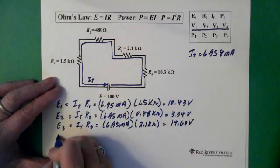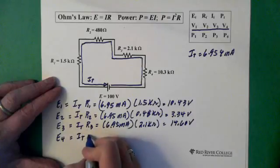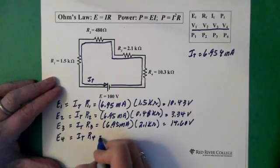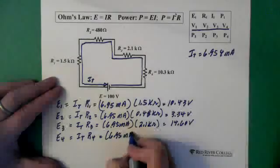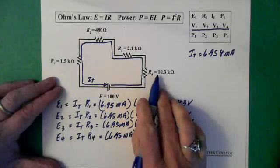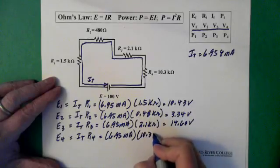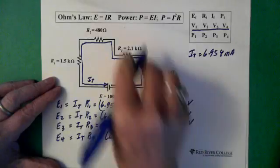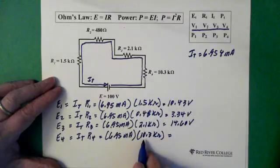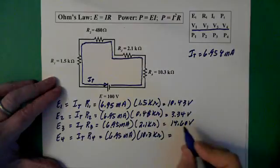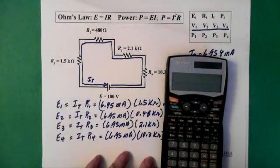And the voltage across resistor 4, again total current times resistor 4, equals 6.95 milliamps times a very large resistor, well maybe not very large but larger than the other resistors we have here, 10.3 kilohms.